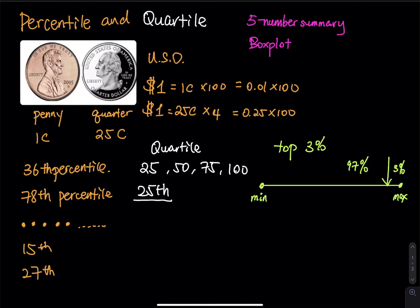If you are exactly at the top three percent, your GPA is higher than 97 percent of all seniors, and only three percent of people have a higher GPA than you. If you are inside the top three percent, you are somewhere from the three percent mark up to the top one percent.